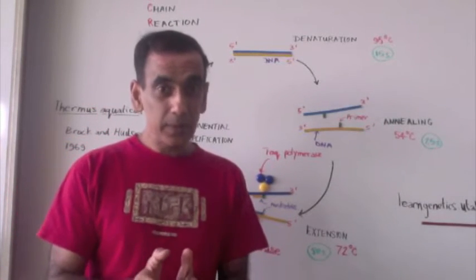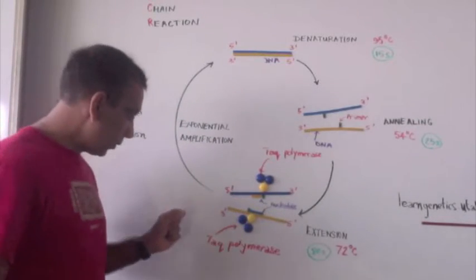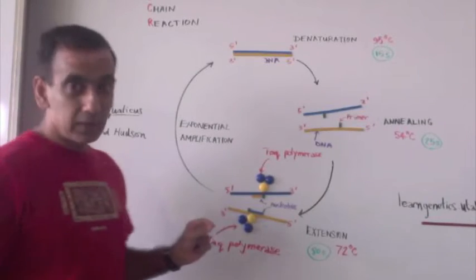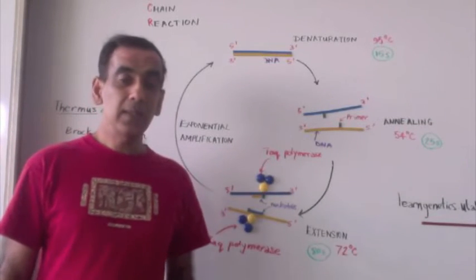All of this was made possible because there was an enzyme, TAC polymerase, that had an optimum temperature of between 70 and 80 degrees Celsius.